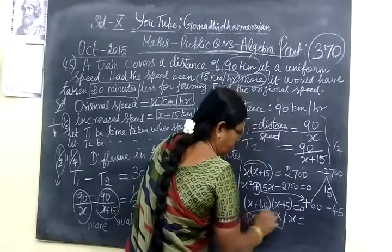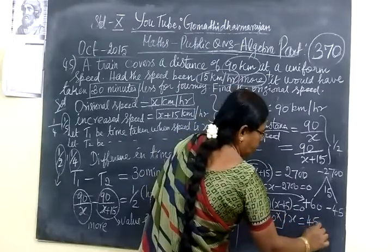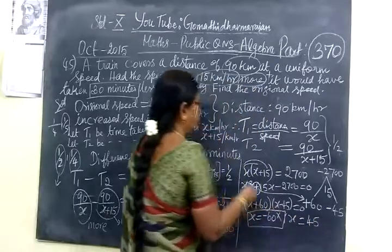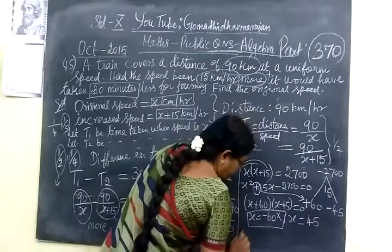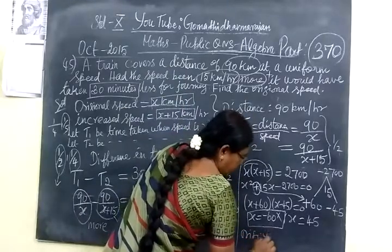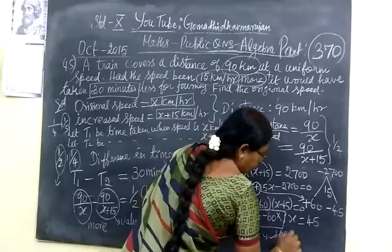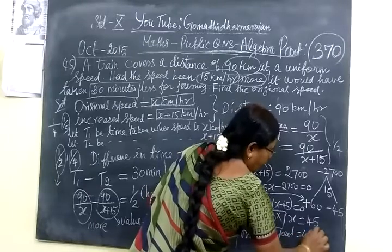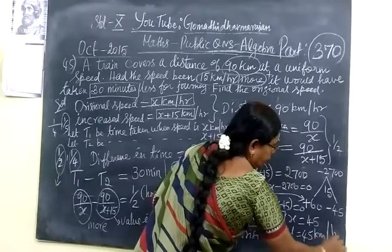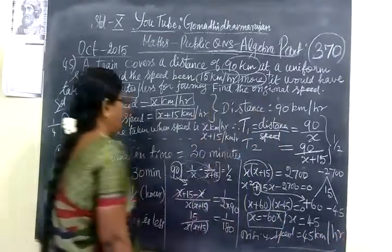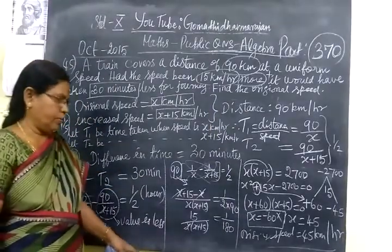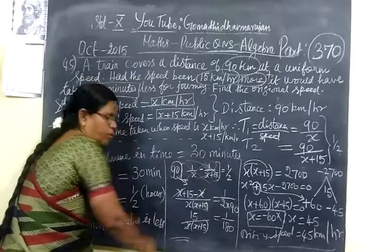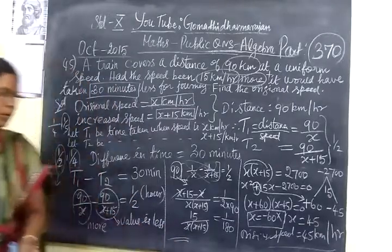x equal to 45 km per hour. So speed of the train equal to 45 km per hour. This is a very important question. Thank you.